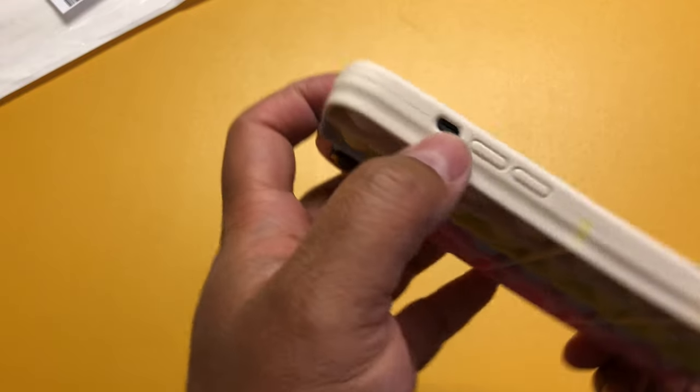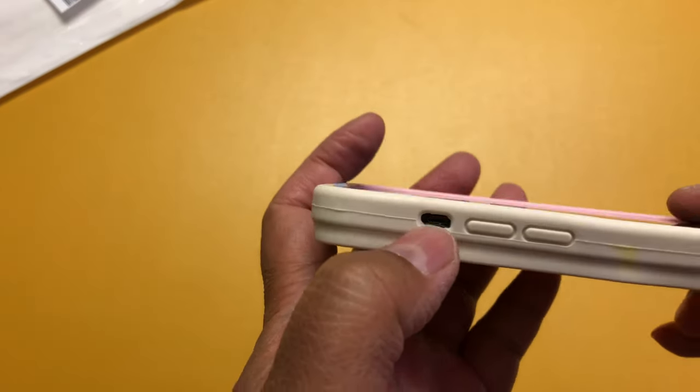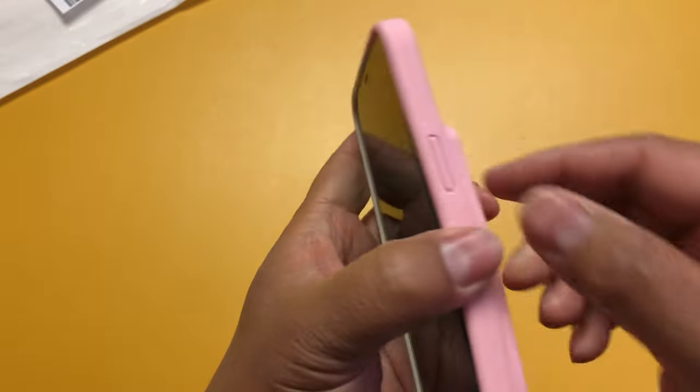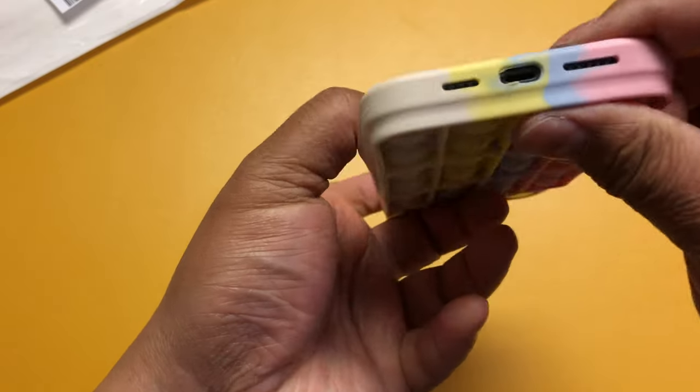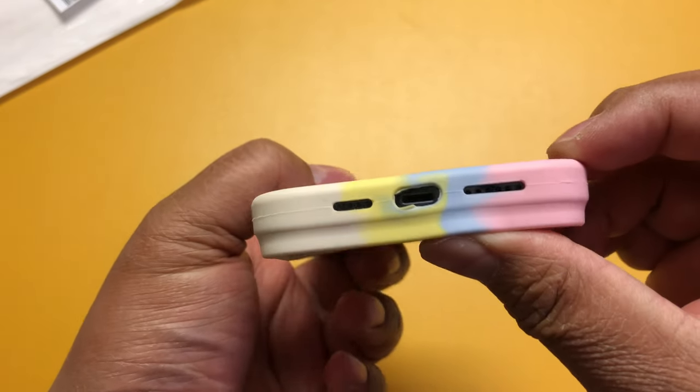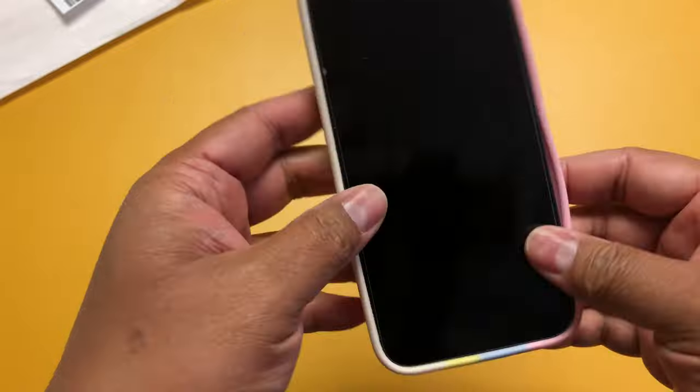So the buttons are easily pressable and you can access the silencer right there. The power button, you can access the ports pretty well on the bottom right here. The speaker ports are nice and open.